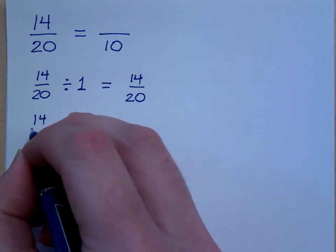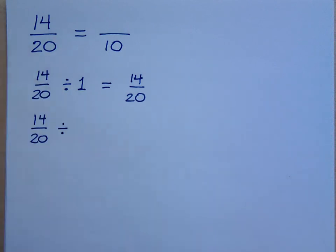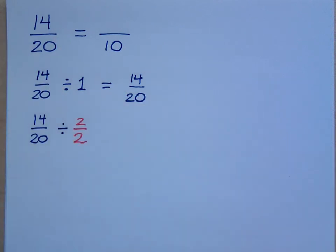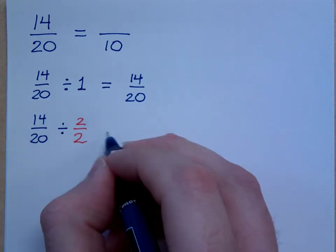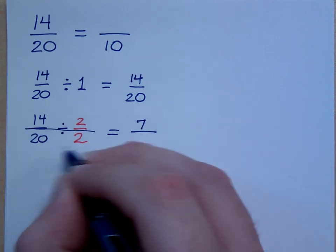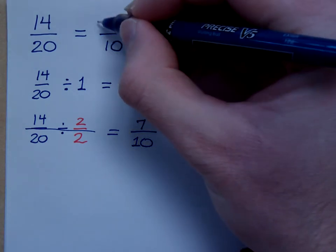But what if I divide by a form of 1? Meaning, say, 2 divided by 2. What's 2 over 2? 2 over 2 is 1. So, jumping ahead to the answer, you would see that 14 divided by 2 is 7. 20 divided by 2 is 10. So, the answer here would be 7 over 10.